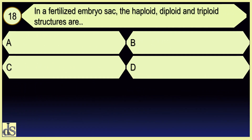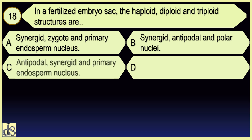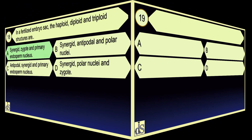In a fertilized embryo sac, the haploid, diploid, and triploid structures are: synergid, zygote, and primary endosperm nucleus.